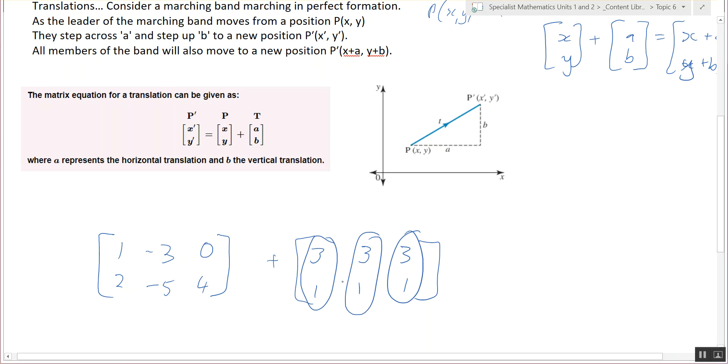But sometimes the question might say, or task, you know half the marching band translates that way and the other half or half of the shape goes this way, so then you'd have different translation columns. Is it kind of making sense?